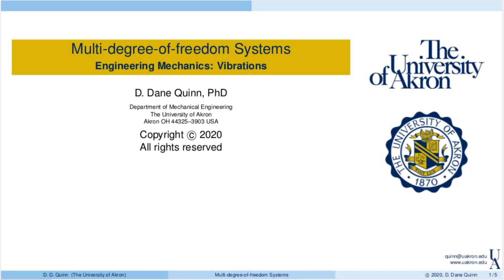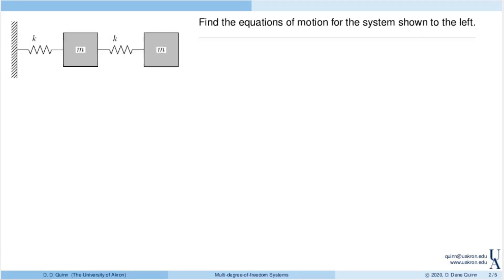Hi, this is Dane Quinn from the University of Akron. Today I'd like to do an example modeling multi-degree-of-freedom systems, and this is for fundamentals of mechanical vibrations. Here's the problem: I've got two masses. Block one is attached to the wall with a spring of stiffness k, and then the second mass is attached to that with an identical spring, and they both have identical masses.